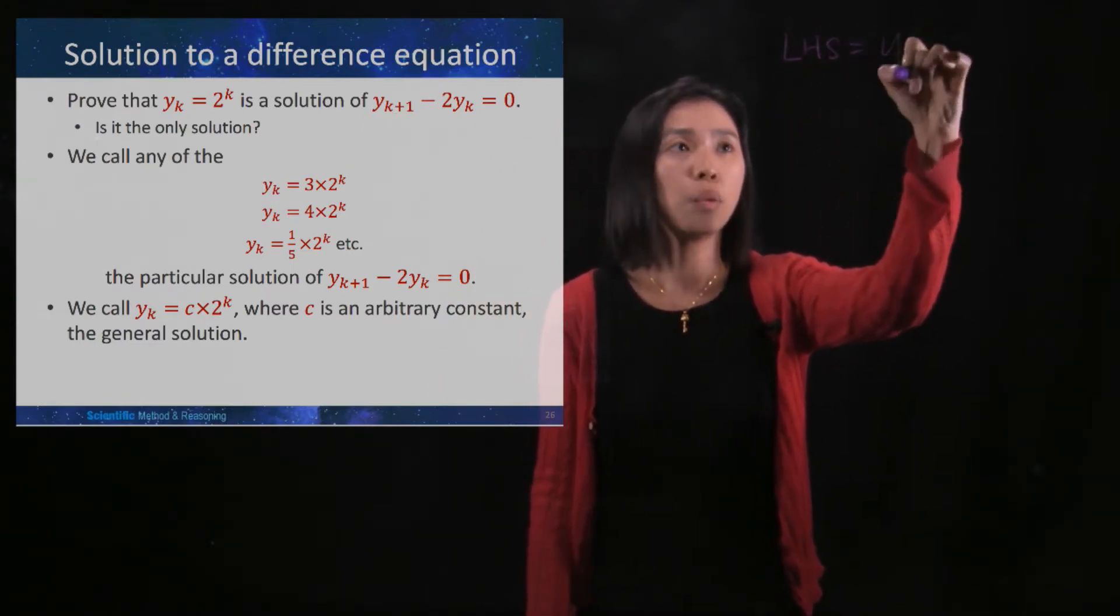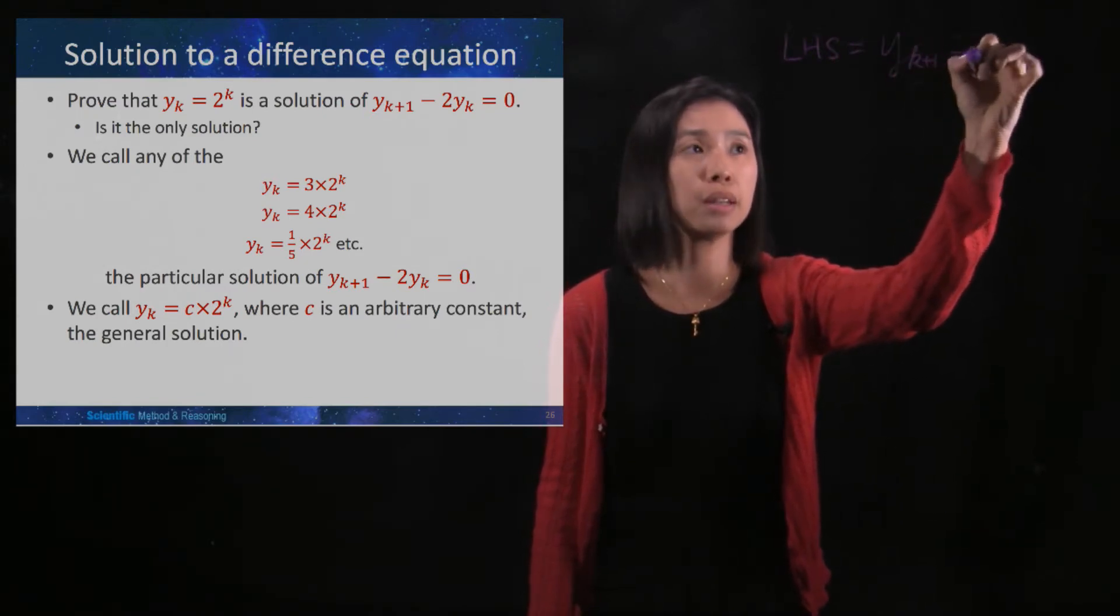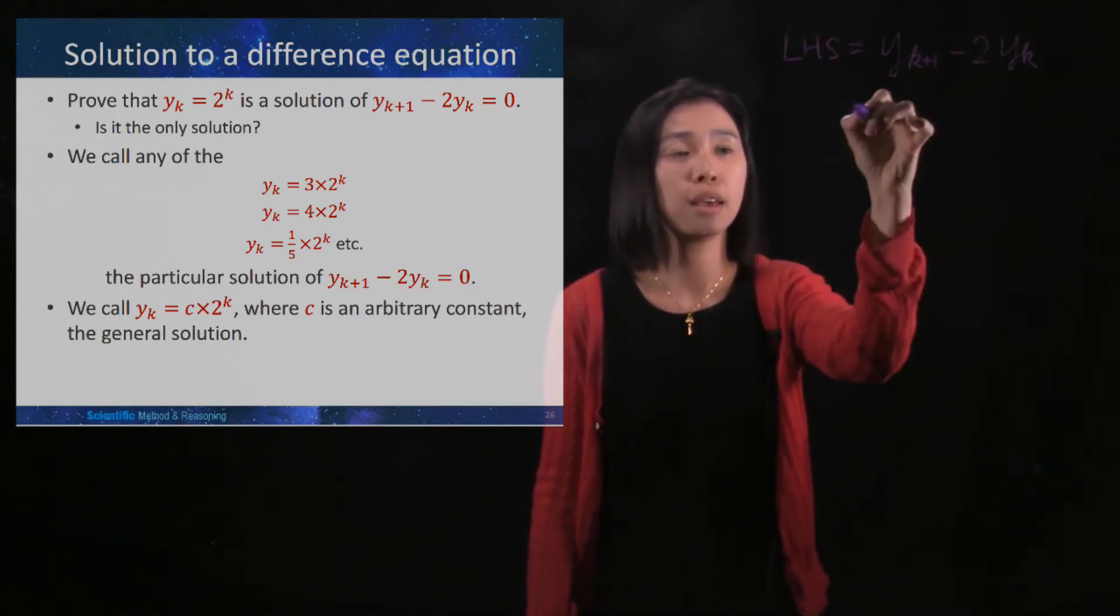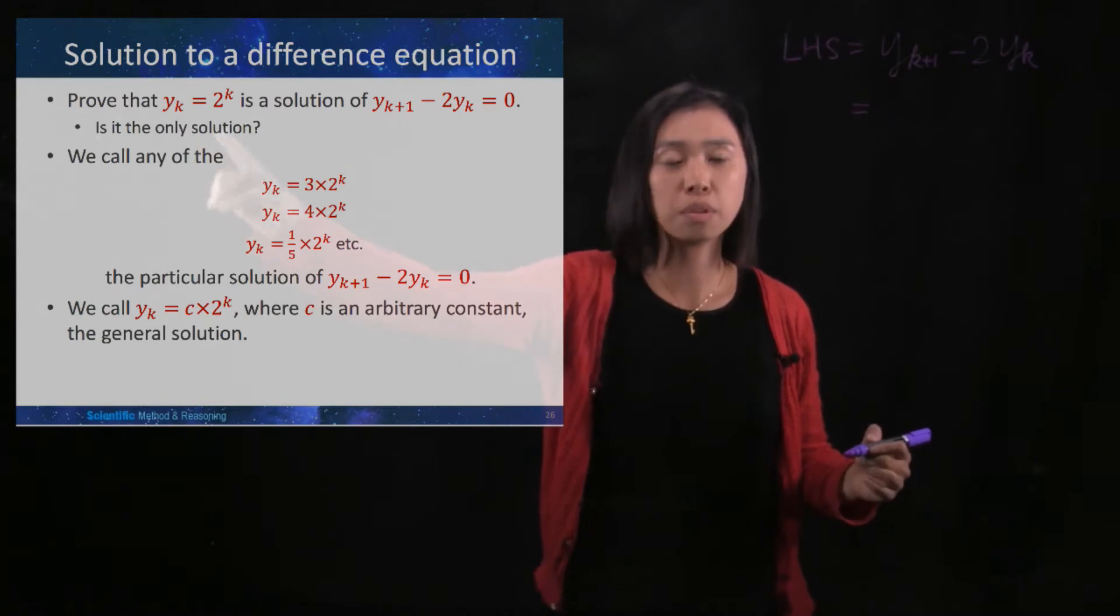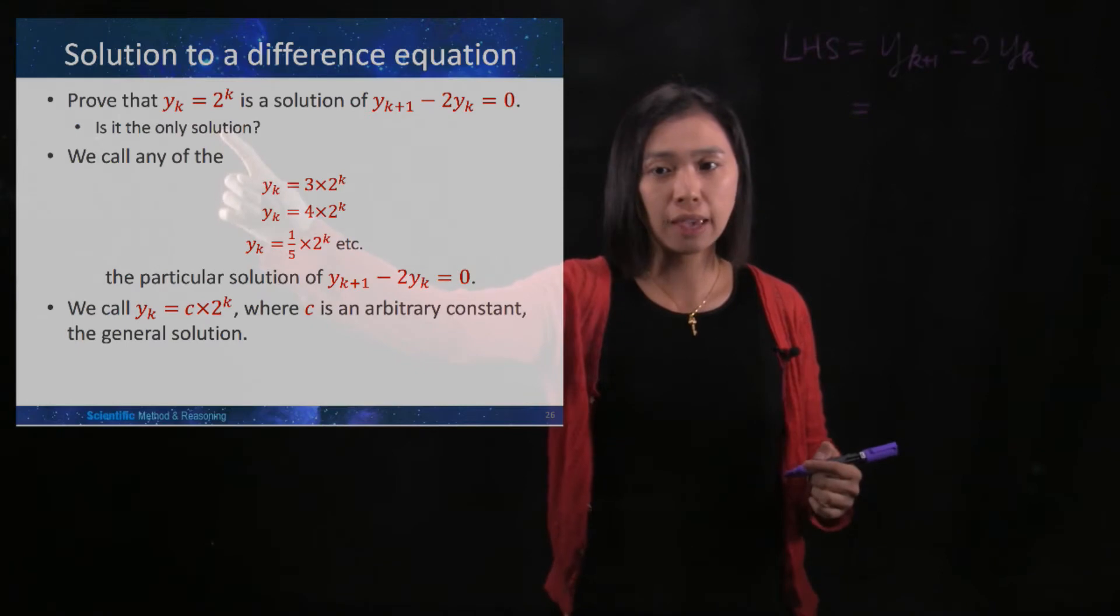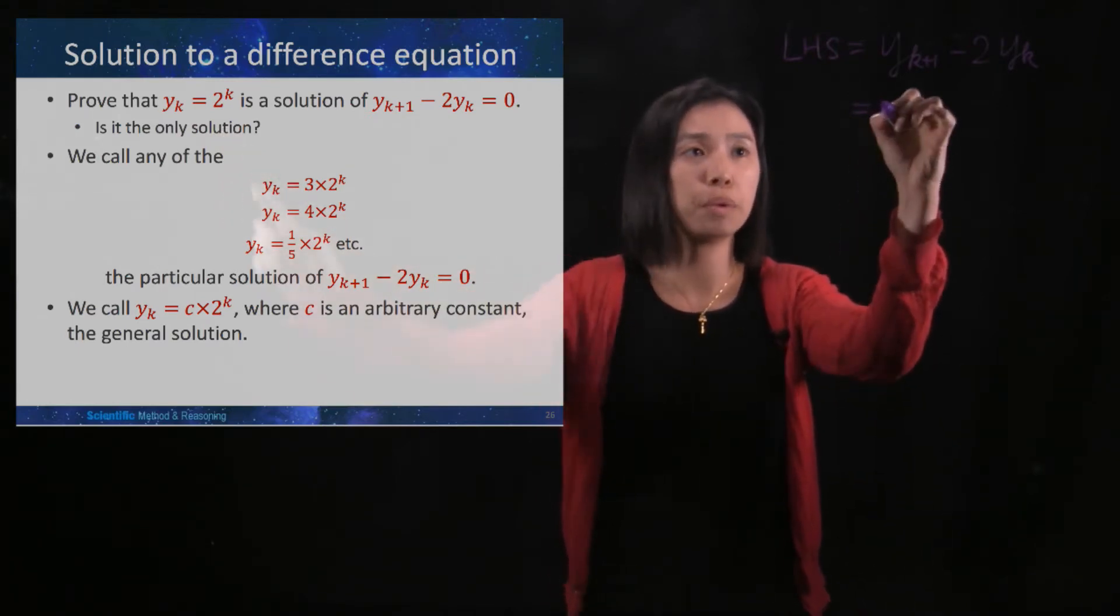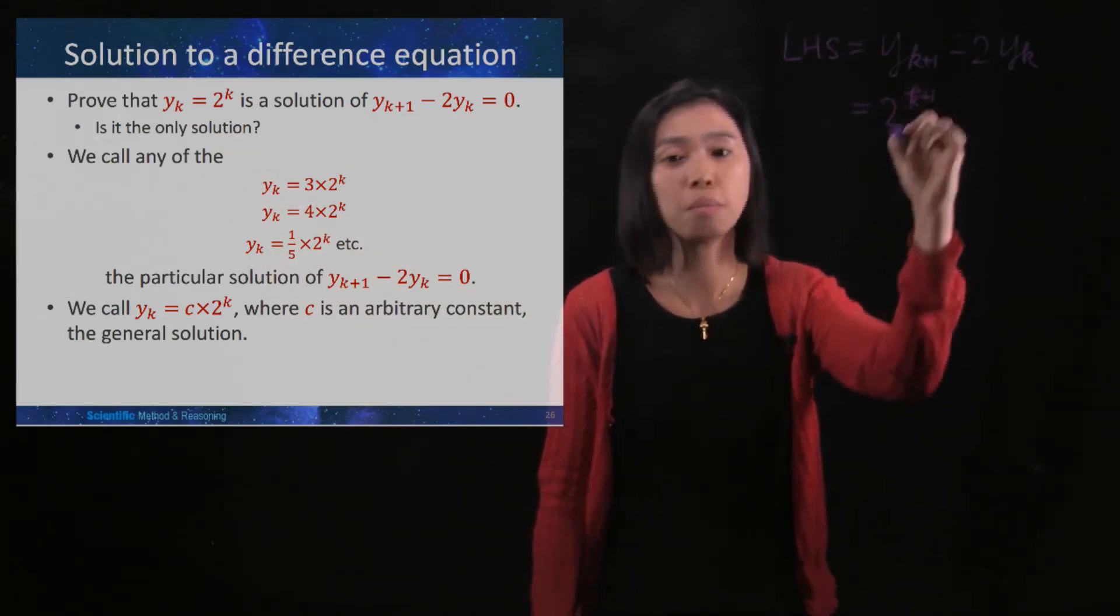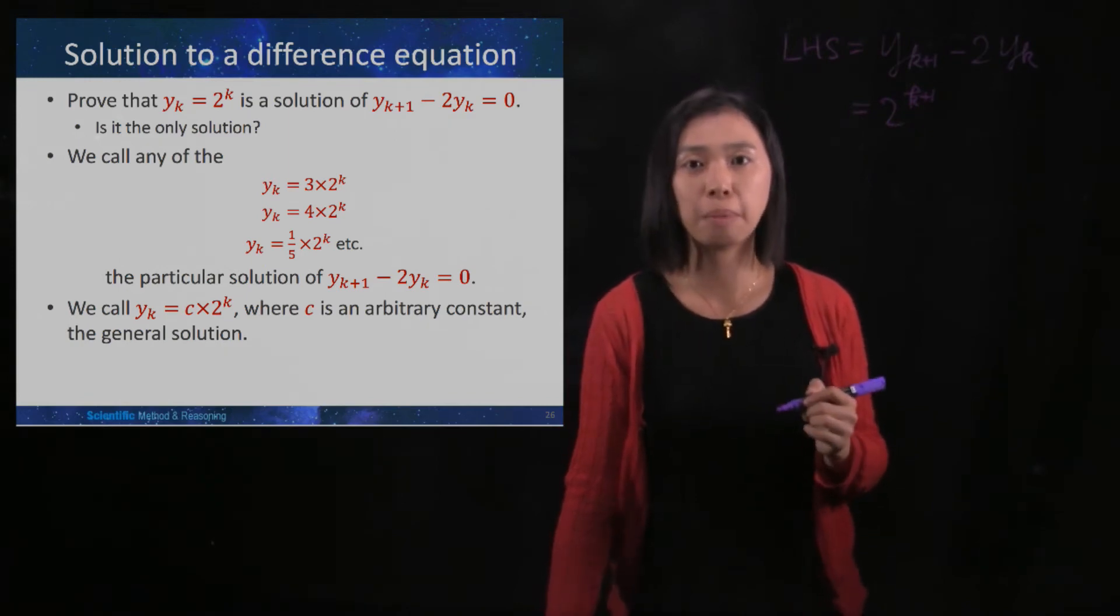So the left hand side is yk plus 1 minus 2yk. And then right now we substitute it into the left hand side. Since yk is 2 to the power of k, then yk plus 1 would be 2 to the power of k plus 1. You simply need to replace the k by k plus 1.